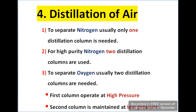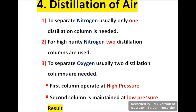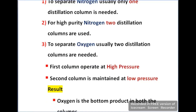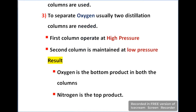Distillation of air: to separate nitrogen, usually one distillation column is required, and to get high purity nitrogen, two distillation columns may be used. To separate oxygen, usually two distillation columns are required — the first column operates at high pressure and the second column operates at low pressure. Oxygen is the bottom product in both columns and nitrogen is the top product.